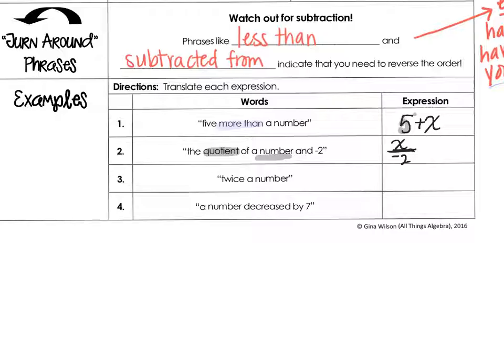Twice a number—twice signifies multiplying by 2. So a number multiplied by 2, or twice a number, we're going to write that as 2x instead of 2 times x. 2x is fancier.